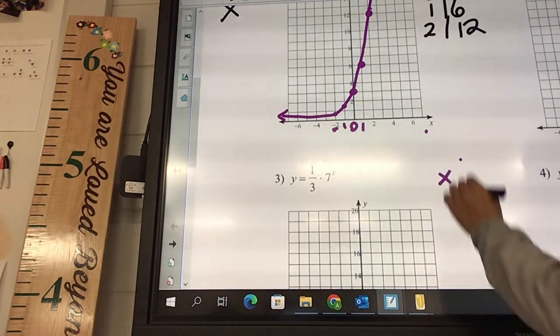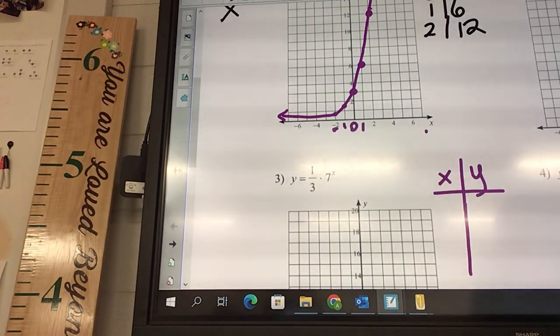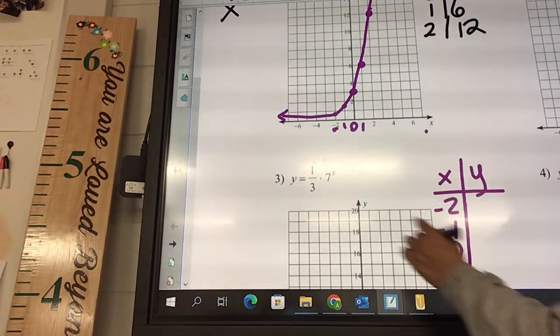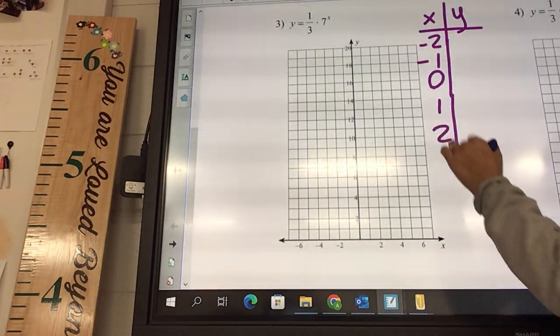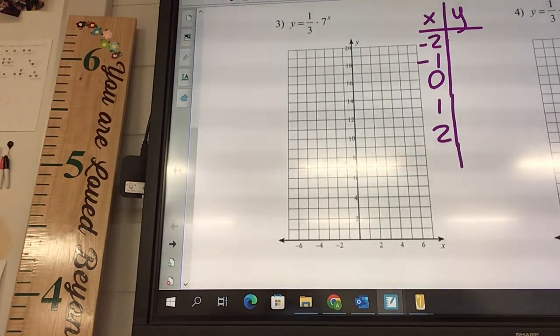Look at number 3. We're going to make our XY chart. Now when you type this one in, the very first button you need to do is the fraction button. You're going to hit the fraction button, 1/3. 1 over 3, and then you need to hit over, and then times. If you don't hit over, it's all going to go with that 3, and it needs to just go completely over. And then times 7, and then we do the same numbers. Negative 2, negative 1, 0, 1, and 2.